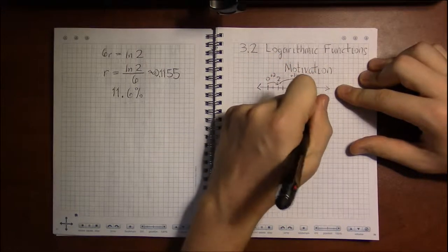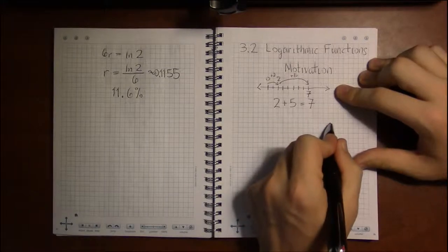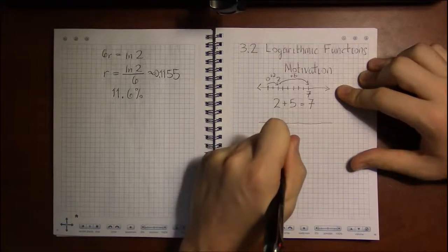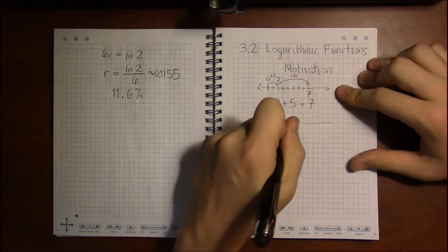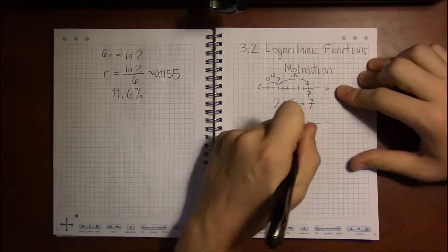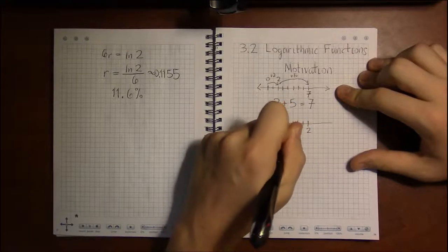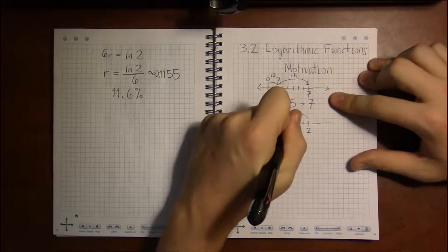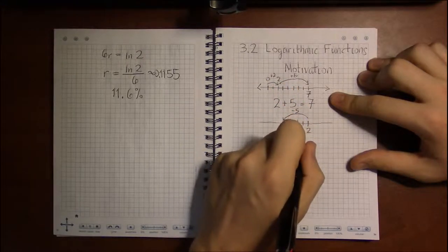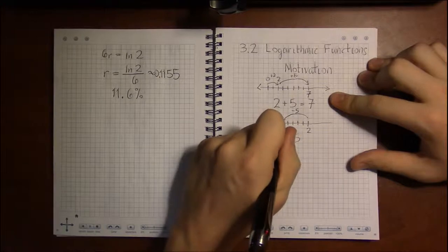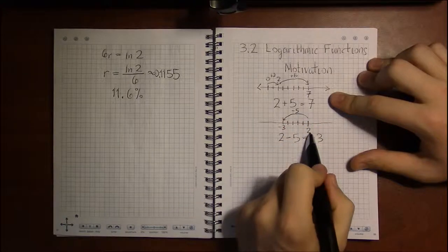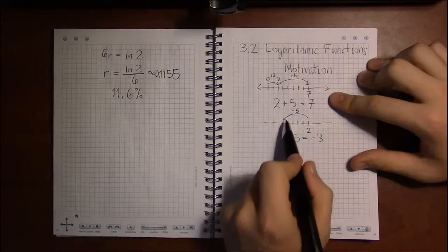And where we ended up was our answer. And then subtraction, if we did 2 minus 5, we could think of this as starting at 2, and then moving left 5. So we end up at 1, 0, minus 1, minus 2, we end up at minus 3, which tells us that 2, then going 5 steps to the left, left us at minus 3.